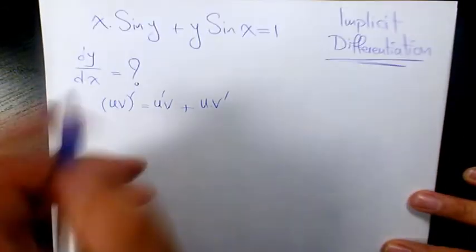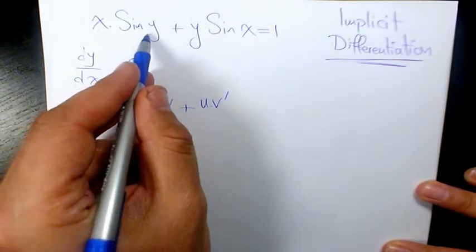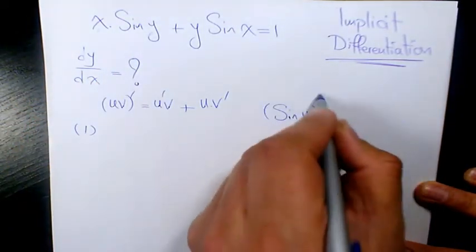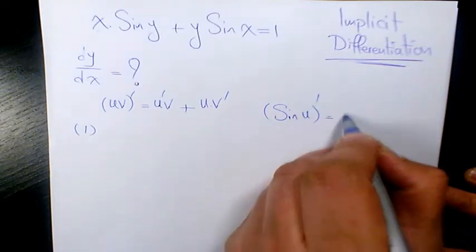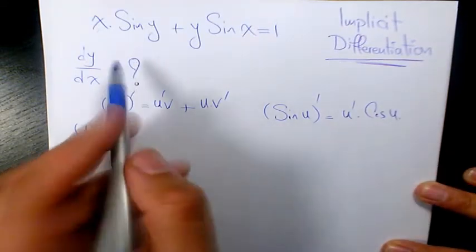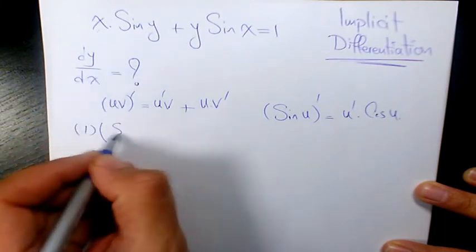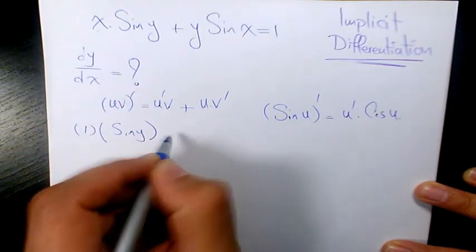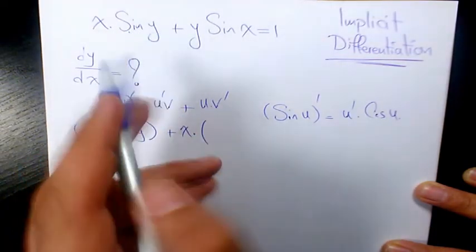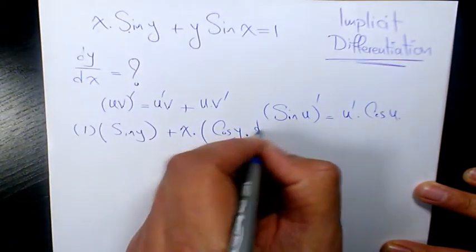So we have the same thing here. Derivative of x is 1. For the derivative of sine y, for example, if you have sine u and u is a function of x, the derivative of sine u will be u prime times cosine u. So we have the same thing here. It's going to be sine y plus x times the derivative of sine y, which is cosine y times dy over dx.